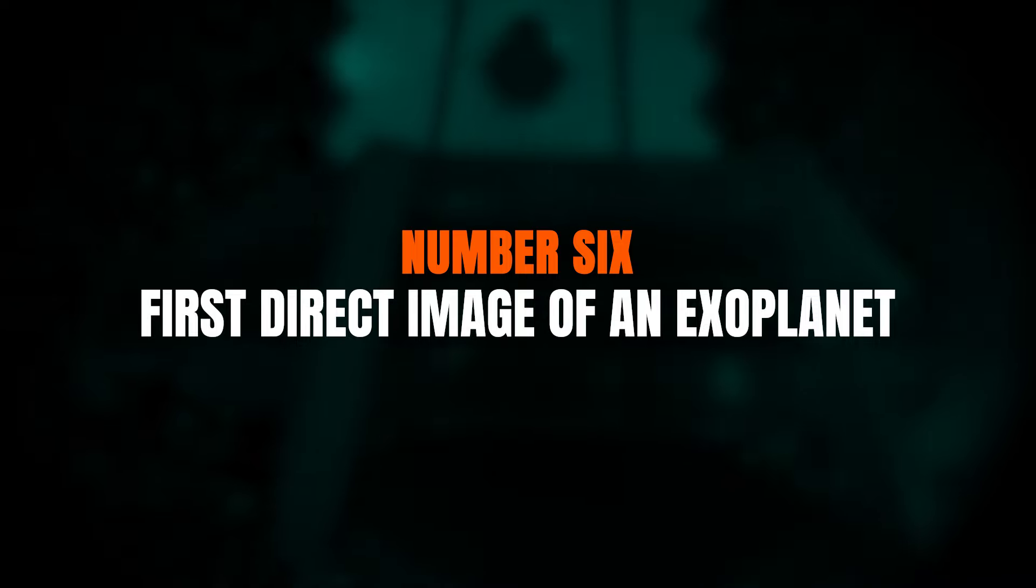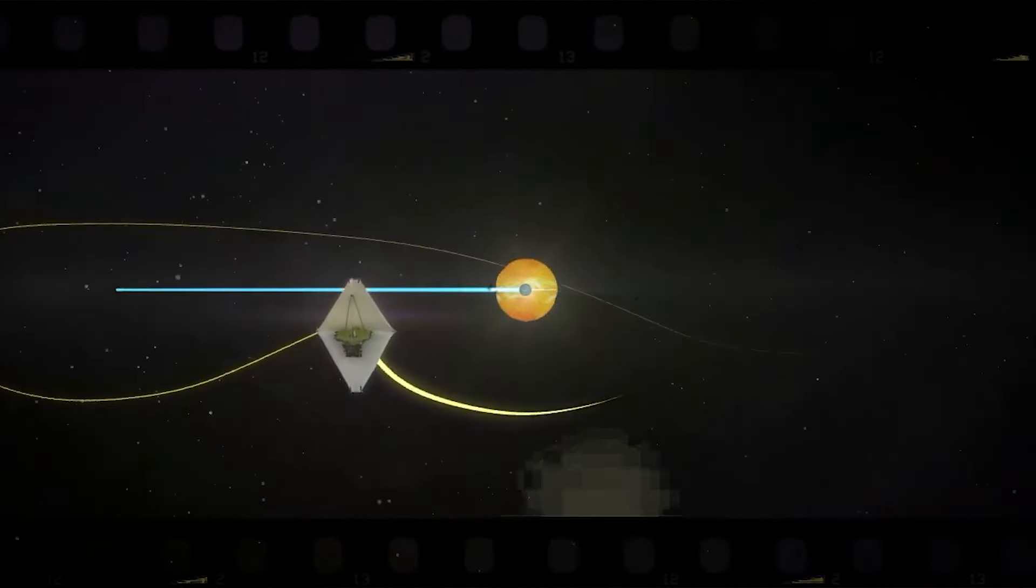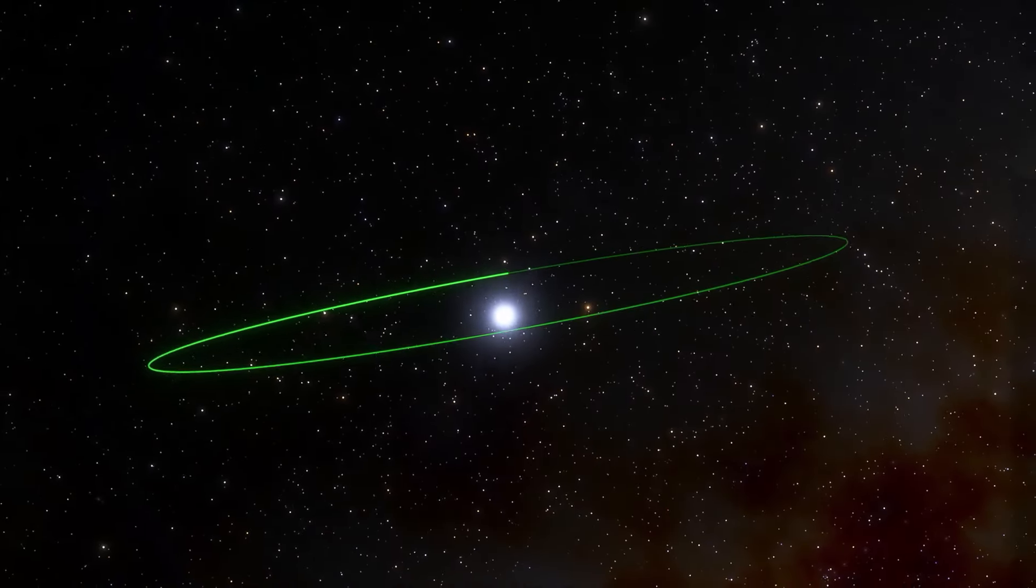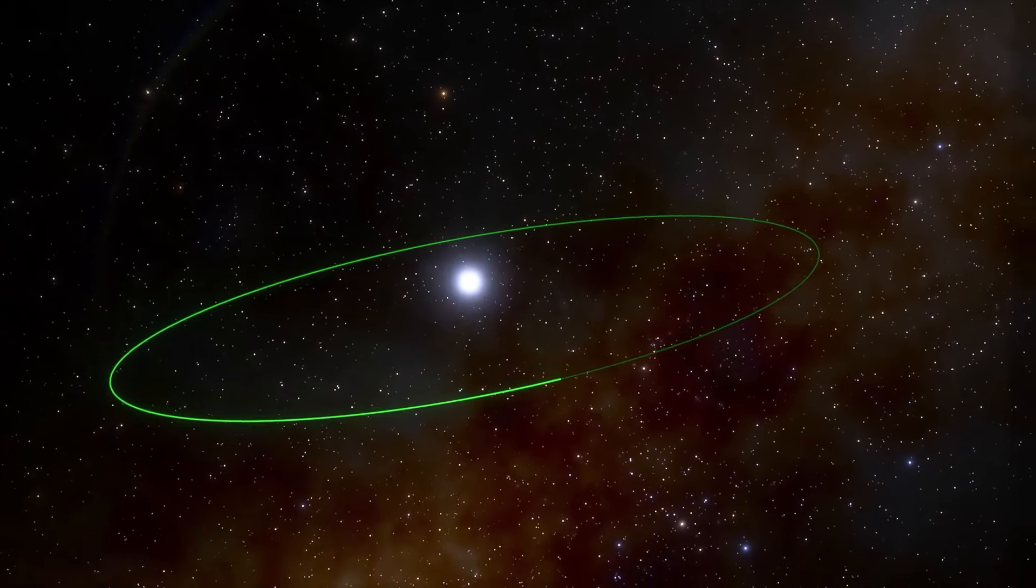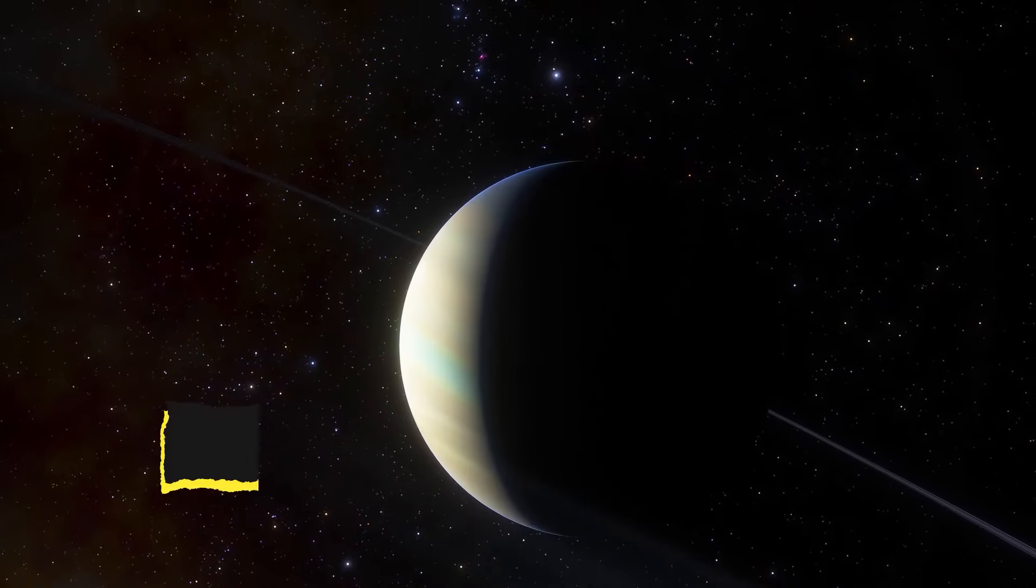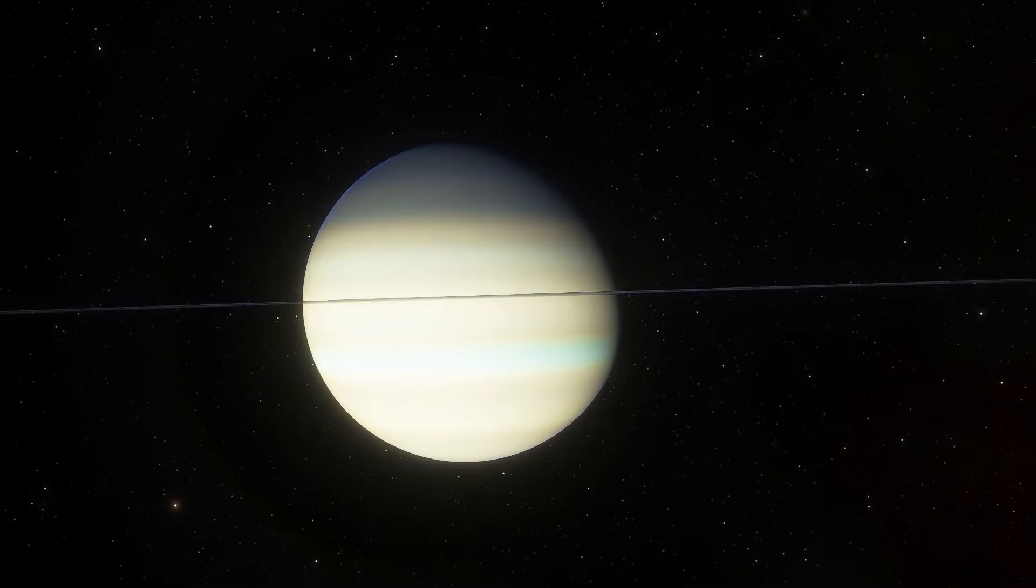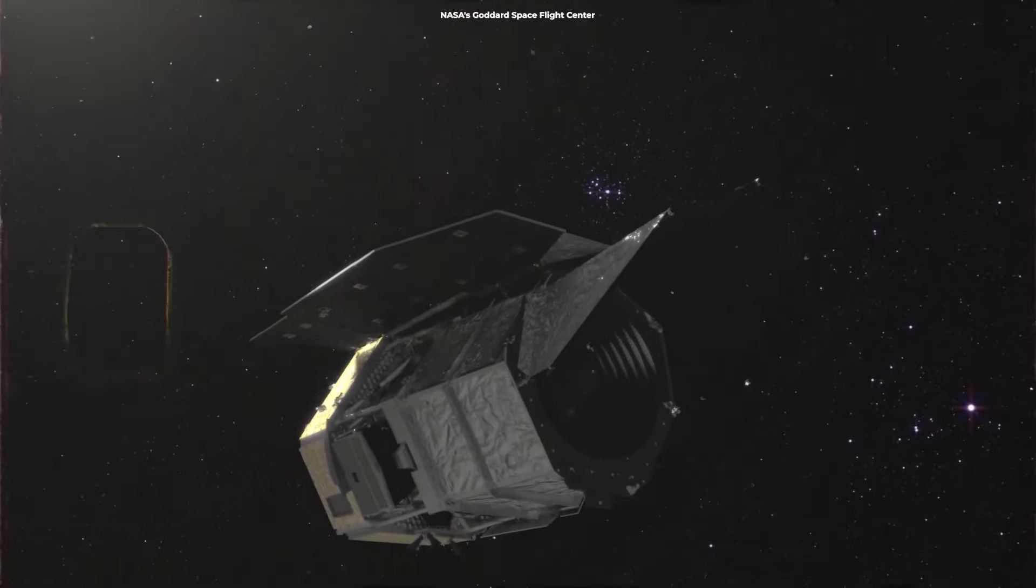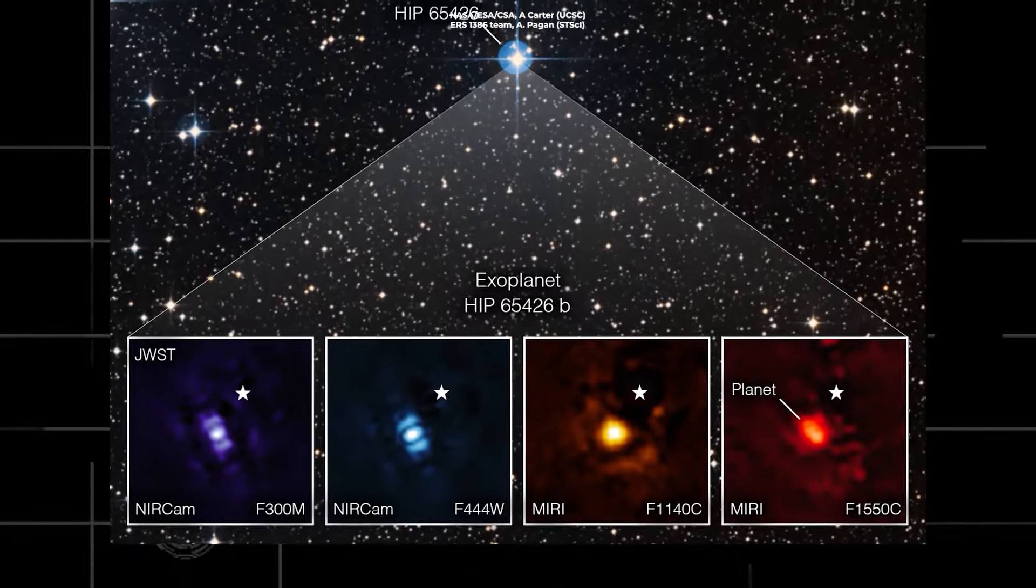Number six, first direct image of an exoplanet. Since the discovery of the first exoplanet in the 1990s, scientists have identified over 3,000 worlds orbiting faraway stars. However, only around two dozen of these have been imaged directly. Most exoplanets are so distant that we can only detect them through a dip in the light of their host star when the planet passes in front of it. But now, the James Webb Space Telescope has changed the game. In September, it captured its first direct image of an exoplanet called HIP 65426b. This was a huge milestone for Webb, and for astronomy in general. To view the exoplanet, scientists used two of Webb's cameras, several filters, and the telescope's coronagraphs, which block out the light of the central star. Along with the telescope's exceptional sensitivity, the planet has several features that make it easier to observe.